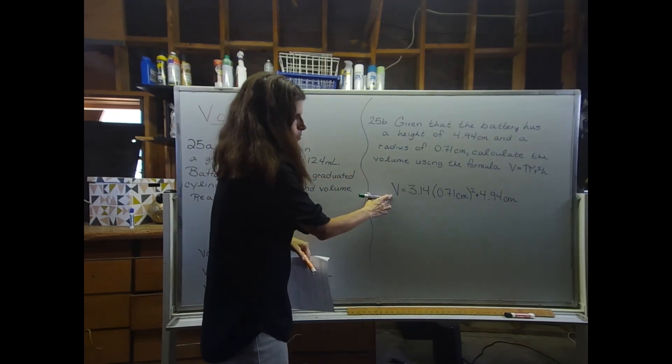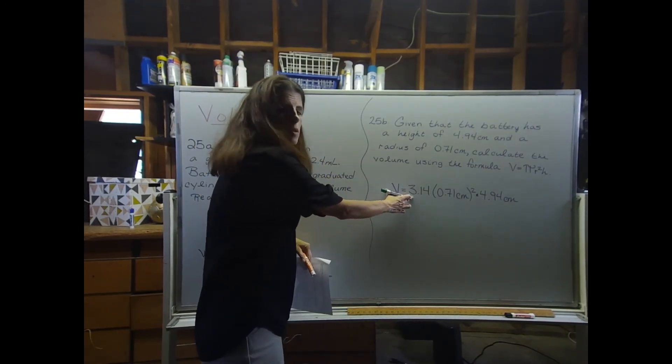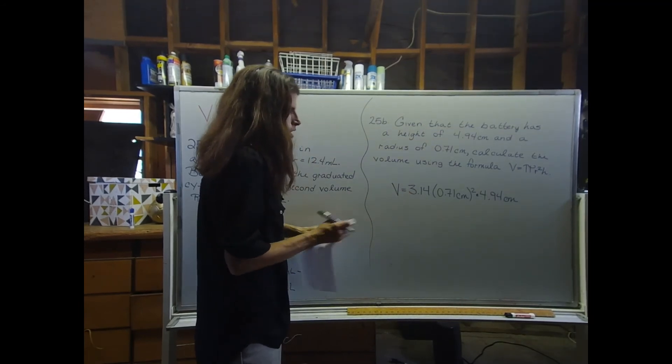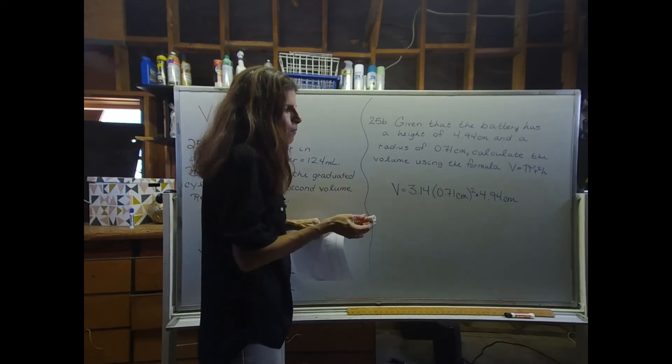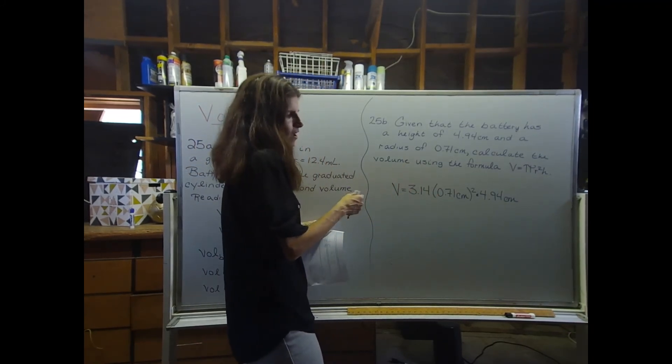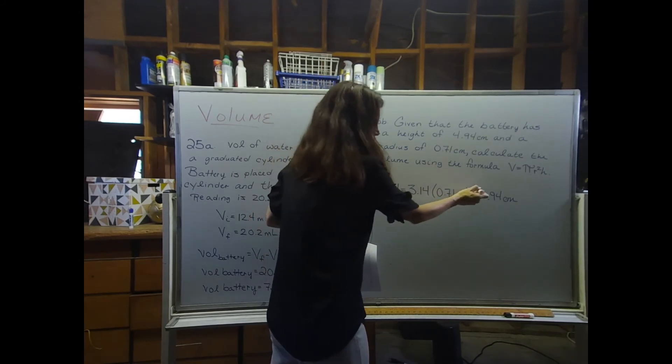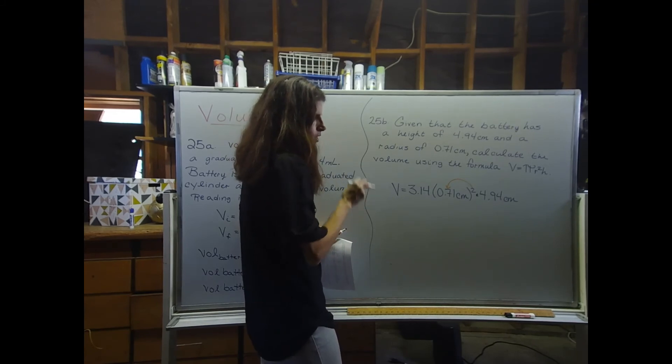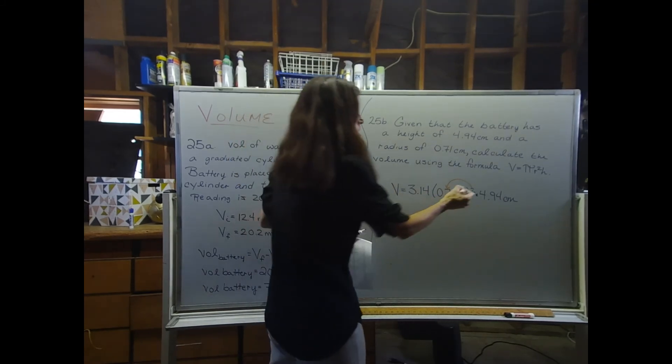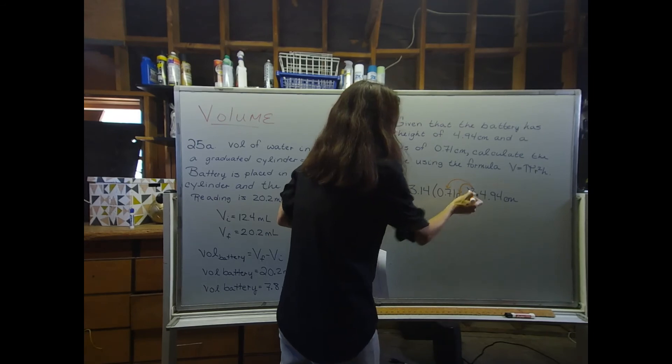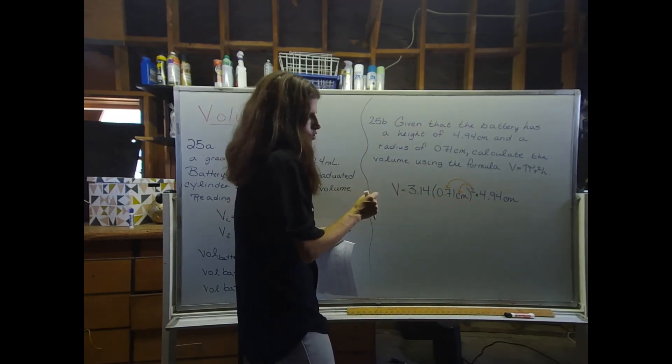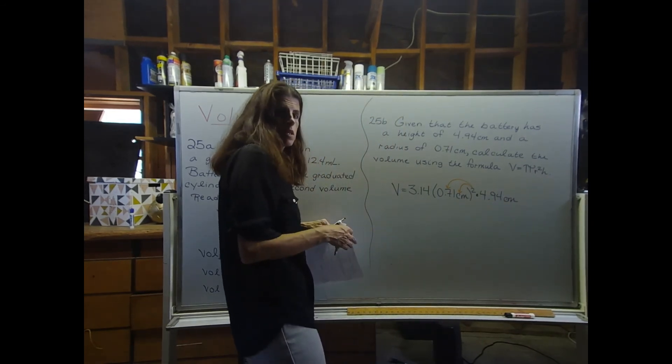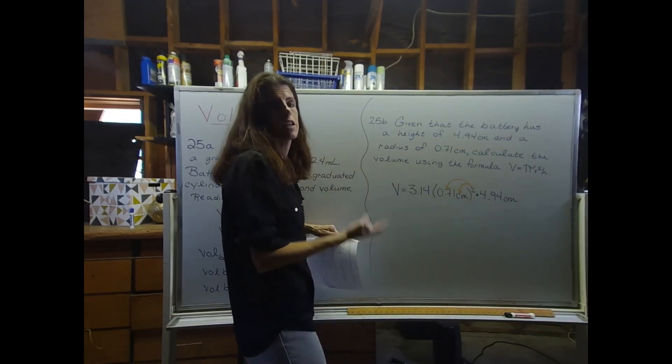I plugged everything into the formula. So use, if you want to, use the pi key on your calculator, or you could type in 3.14. The big thing here is the radius is squared. So the squared part gets distributed to the 0.71. So in my calculator, I need to do 0.71 squared, but the squared part also applies to the units of centimeters. So now I have centimeters squared times centimeters, which gives me the appropriate final units of centimeters cubed.